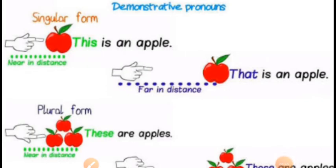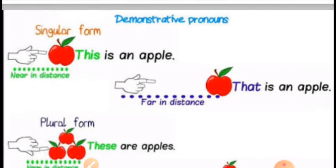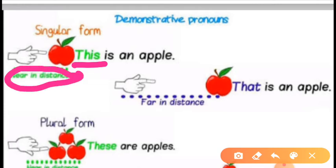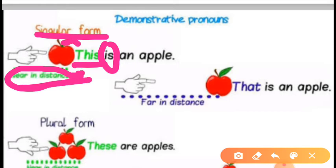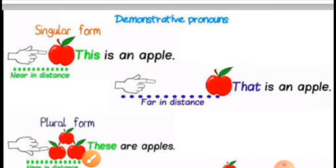Here are some examples of demonstrative pronouns: this, that, these, those. 'This' is used for the singular form, when the object is near and close to the speaker, and it is followed by 'is.' For example: this is an apple, this is a book, this is a table. Close to the speaker means the person who is speaking about the thing.